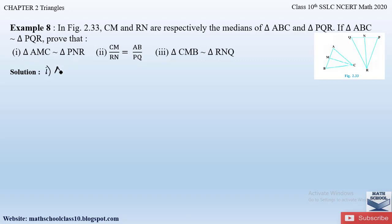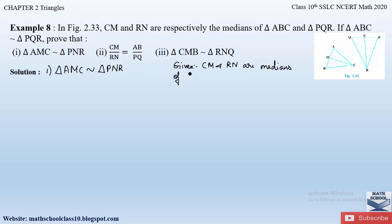Let us prove the first part: triangle AMC is similar to triangle PNR. First, let us write down what is given. Given: CM and RN are medians of triangle ABC and triangle PQR, and triangle ABC is similar to triangle PQR.